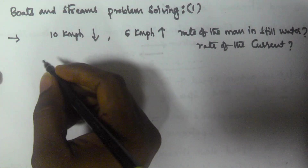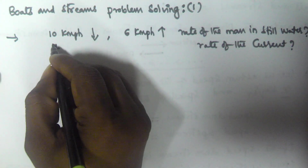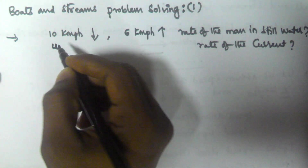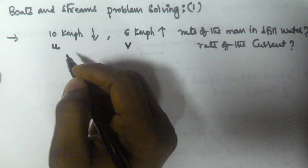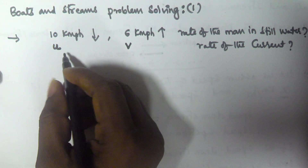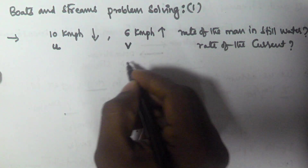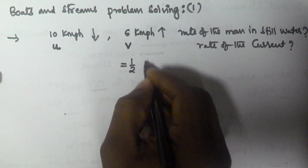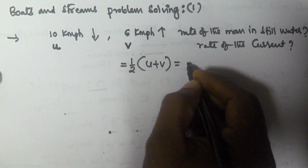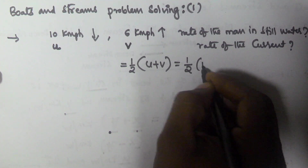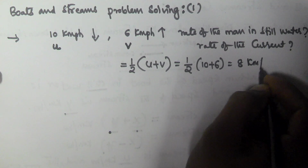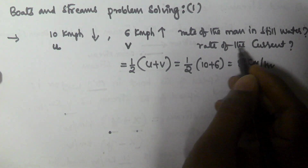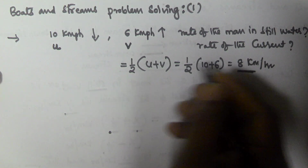The rate of the man in still water is given by 1/2 into (U + V), where U is upstream and V is downstream. So that is 1/2 of (10 + 6), which gives us 8 km per hour. That means the rate of the man in still water is 8 km per hour.